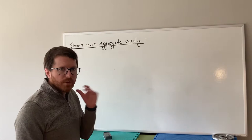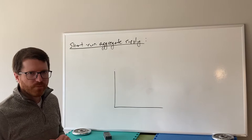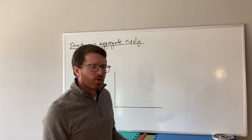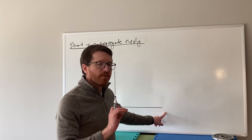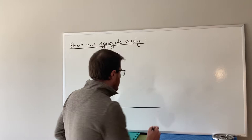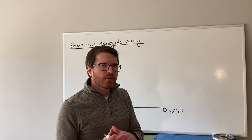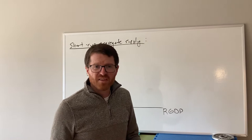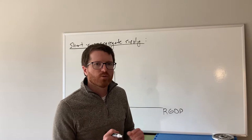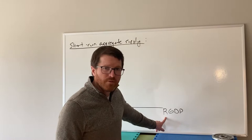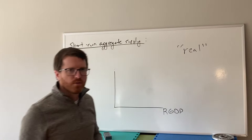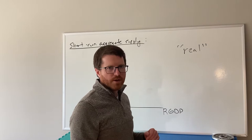Short-run aggregate supply, though — when we think about these markets, we're no longer connecting price and quantity. Rather, we're thinking about it on a macroeconomic level. So instead of putting quantity on this axis, we're not going to think about the quantity of a type of good; we're going to think about the quantity of all goods. The best way to measure that is with real GDP — real gross domestic product. That's basically the total value of everything sold in a country in a year. In the United States, our GDP is like 23 trillion dollars. That little R in front — real — just means it's adjusted for inflation.